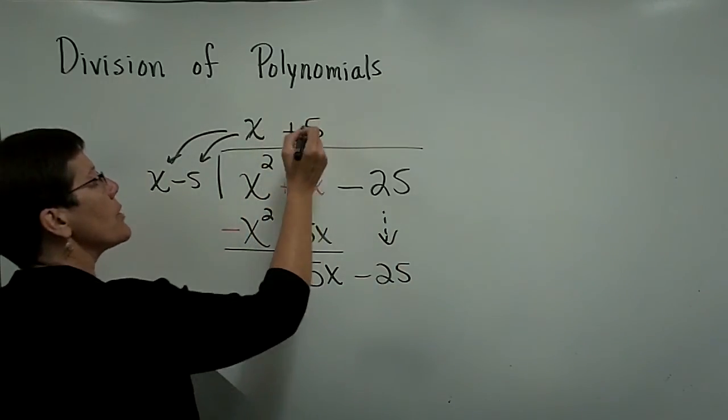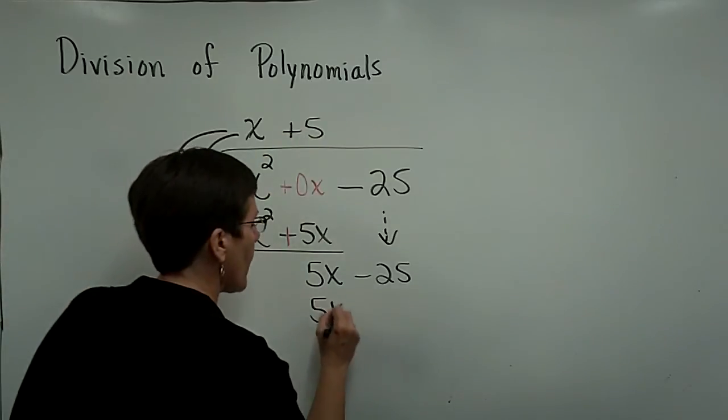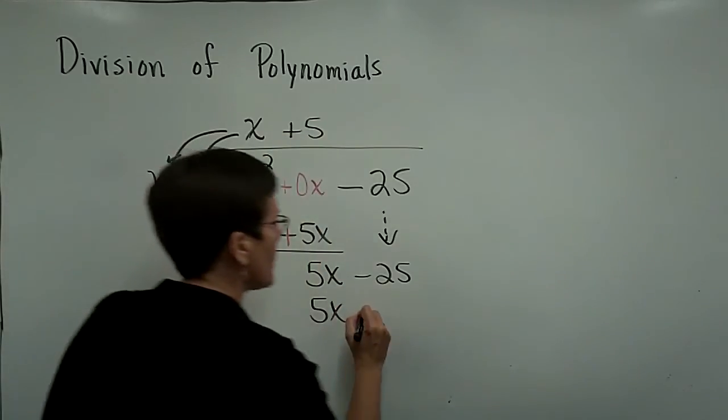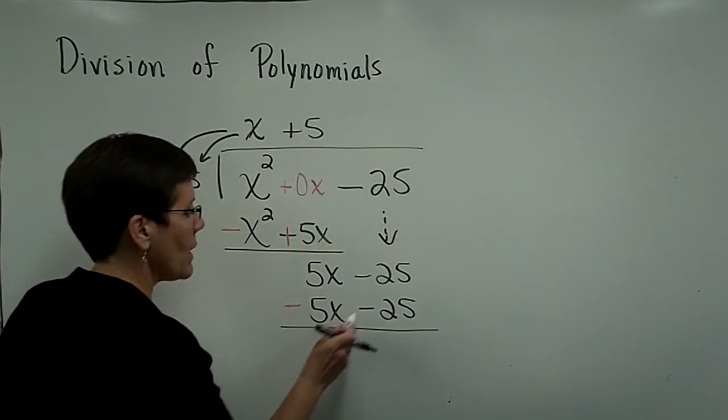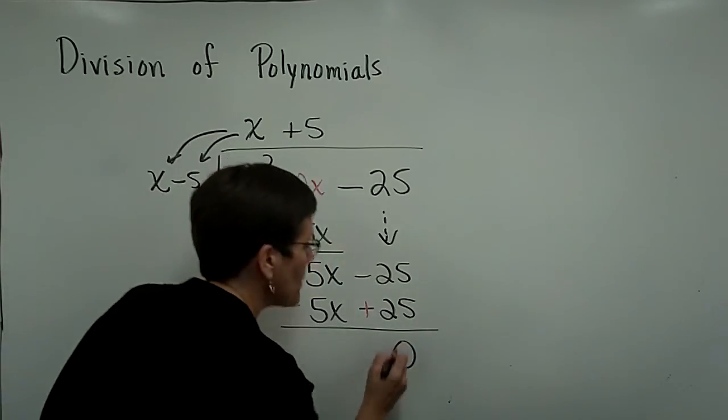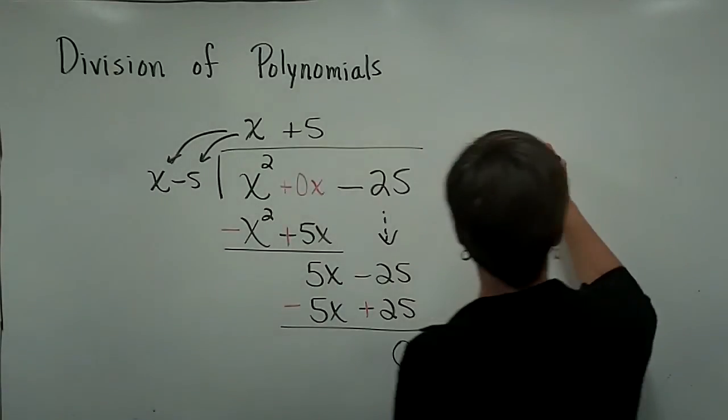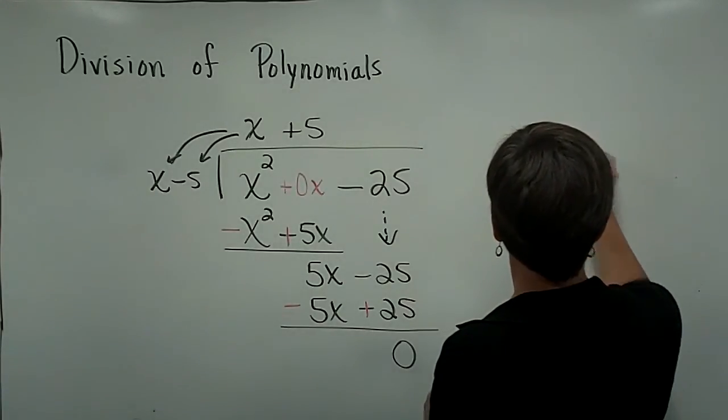Finally, I'll put a 5 here because 5 times x is 5x. And 5 times a negative 5 is a negative 25. And I will change my signs. And I happen to get a remainder of 0 again. So my answer to this problem is x plus 5.